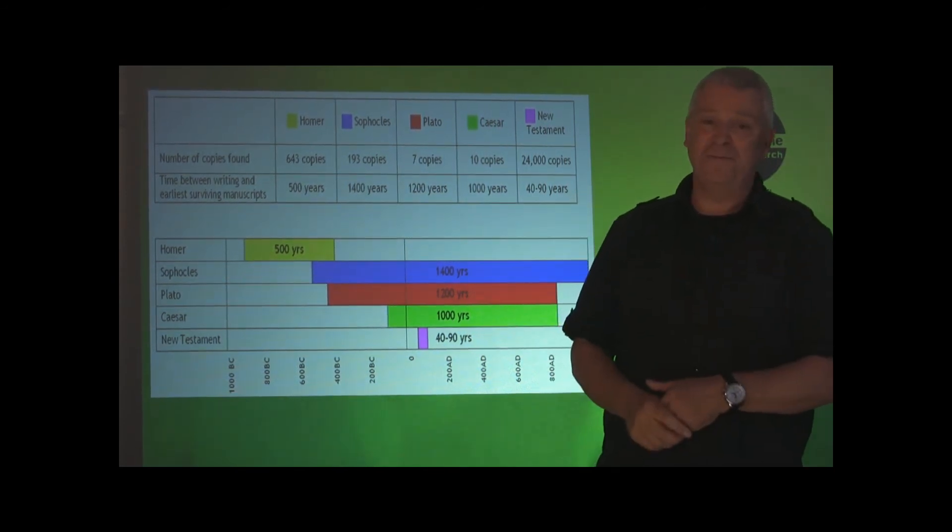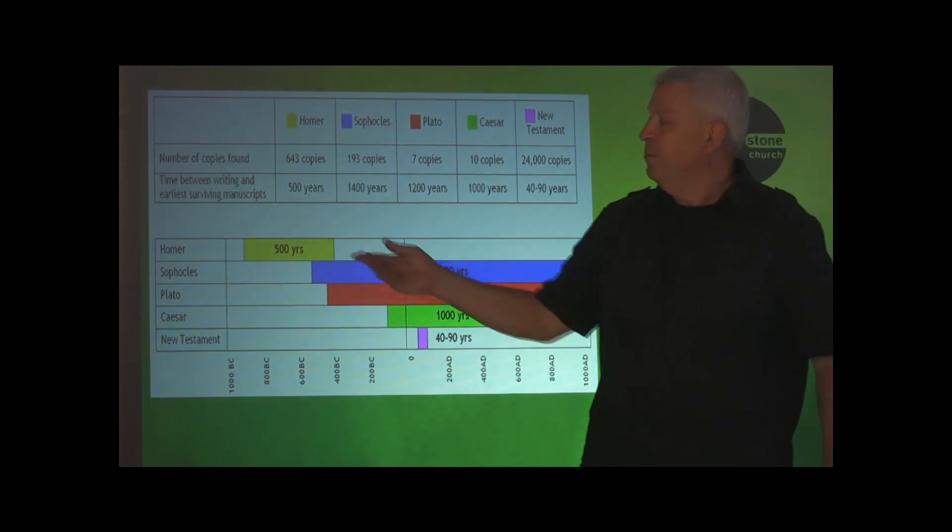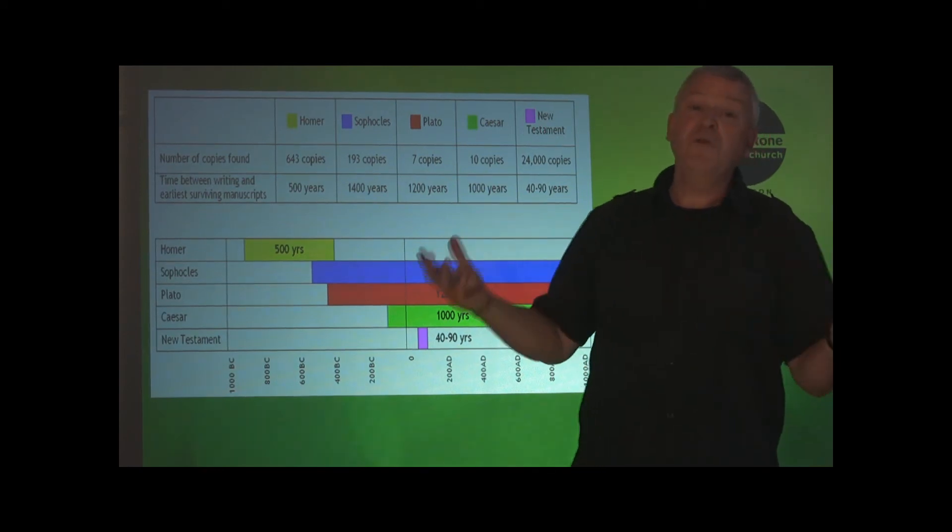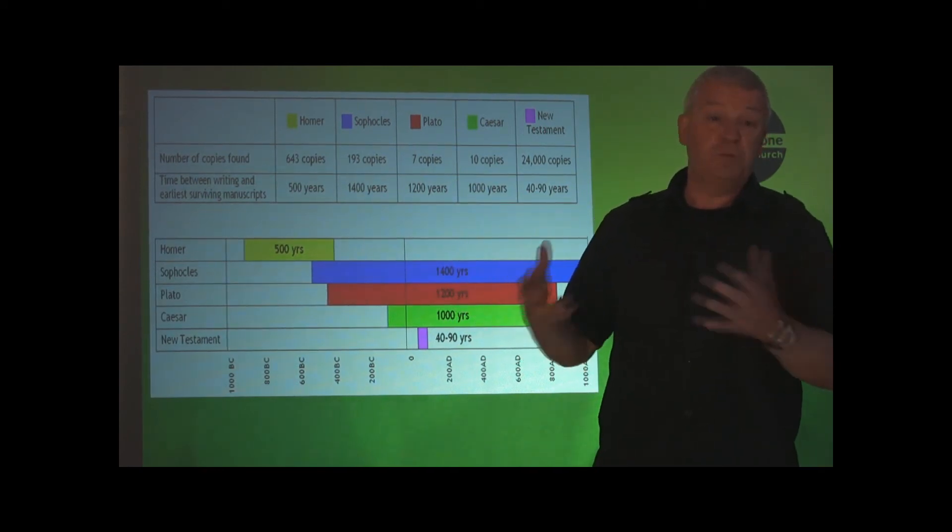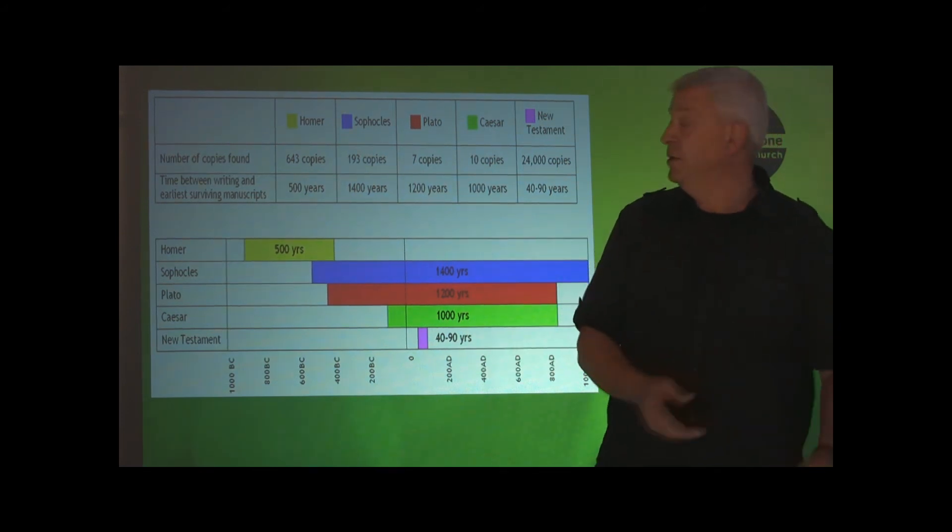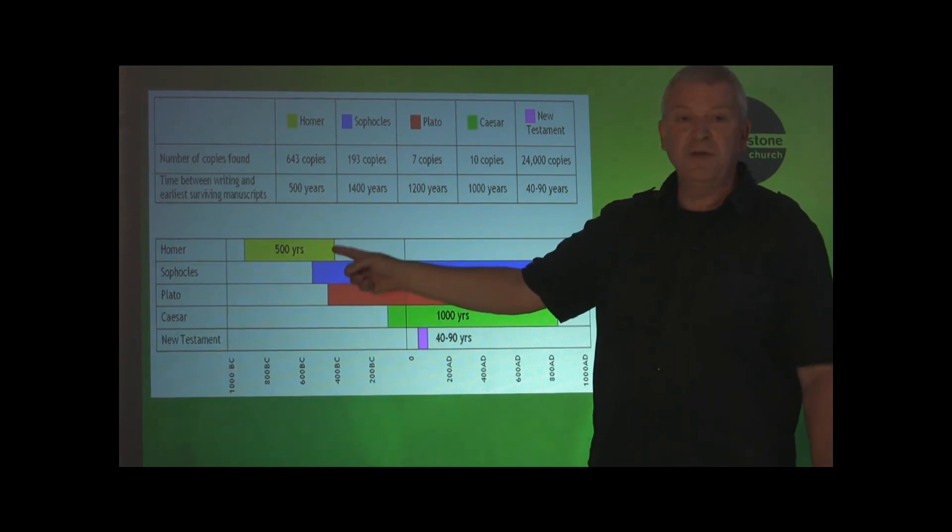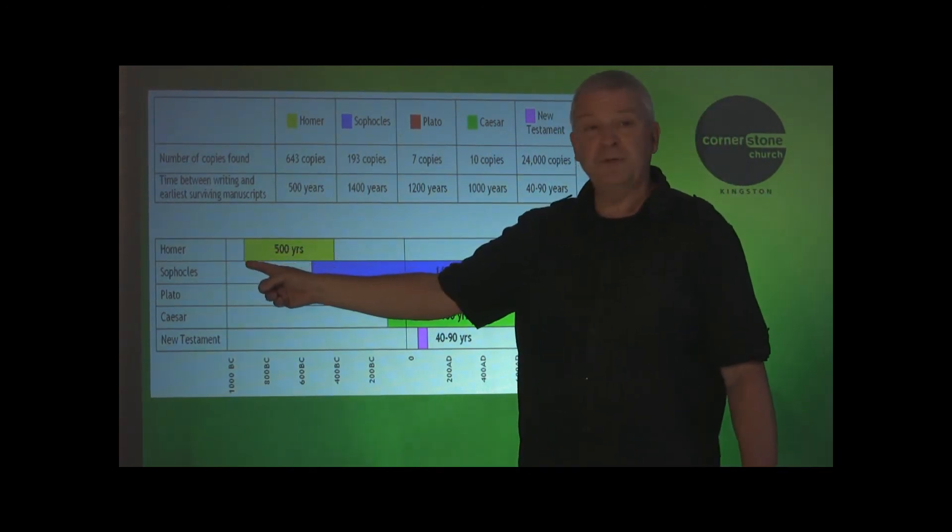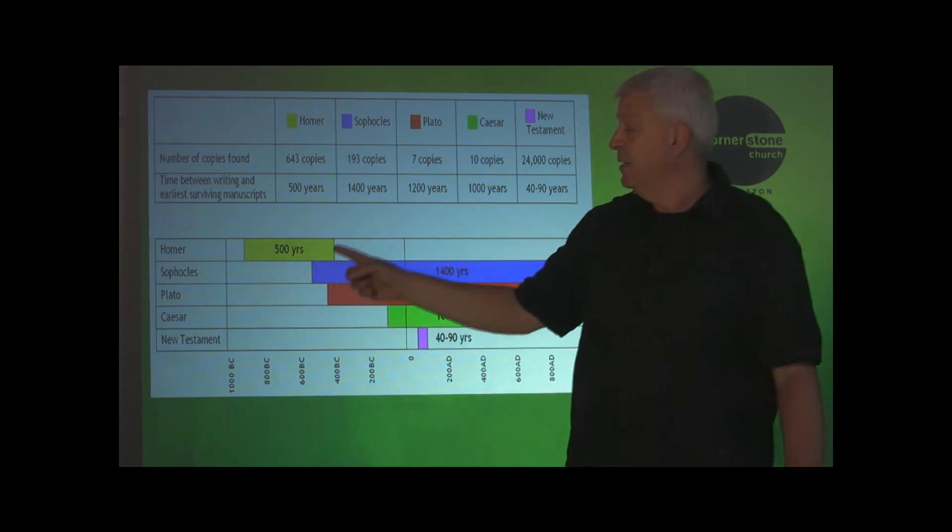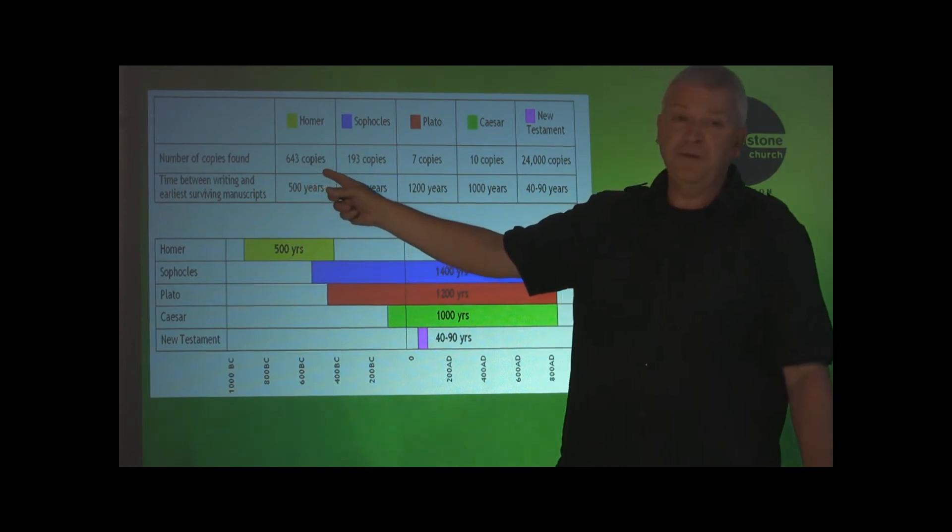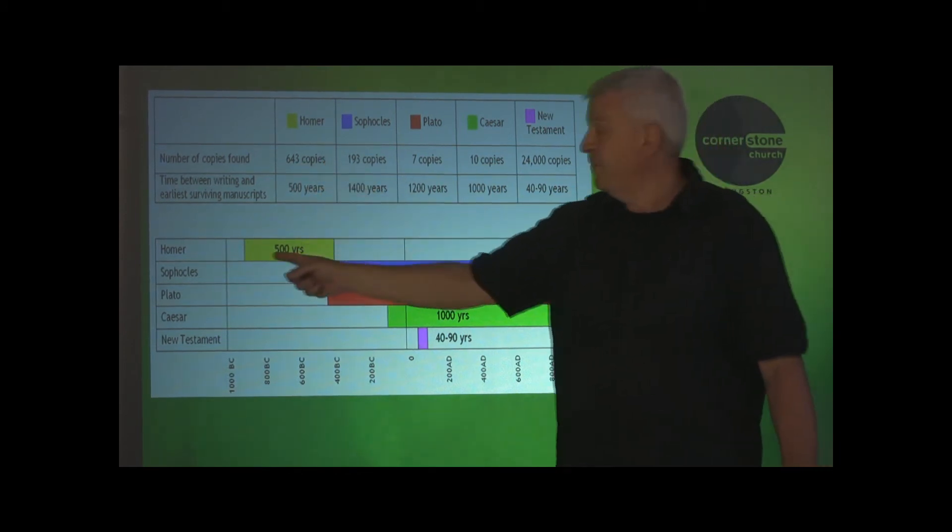So we've got a number of ancient writers here that the historians would say are accurate copies. What we read now is what they wrote. So Homer, for instance, who wrote the Iliad, he wrote that back here, and 500 years until we get the earliest known copy. So there's a 500-year gap between when Homer wrote the Iliad and the earliest known copy, and there are only 643 copies.